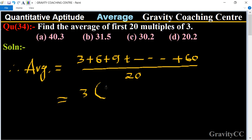We know that the sum of first n natural numbers has the formula n times n plus 1 divided by 2.